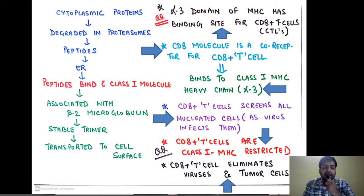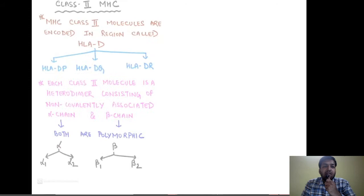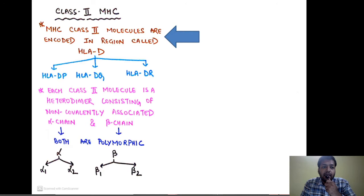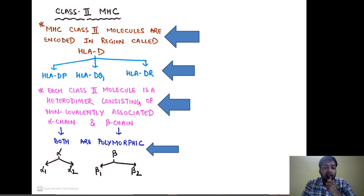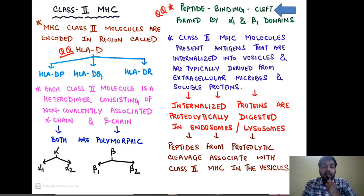CD8-positive T cells will eliminate viruses and tumor cells. Moving ahead — the class 2 MHC molecules are encoded in a region called HLA-D, composed of HLA-DP, DQ, and DR. Each class 2 molecule is a heterodimer composed of an alpha and a beta chain, non-covalently associated. Both chains are polymorphic — alpha has alpha 1 and alpha 2, beta has beta 1 and beta 2. An important MCQ: the peptide binding cleft of class 2 MHC is formed by alpha 1 and beta 1 domains.